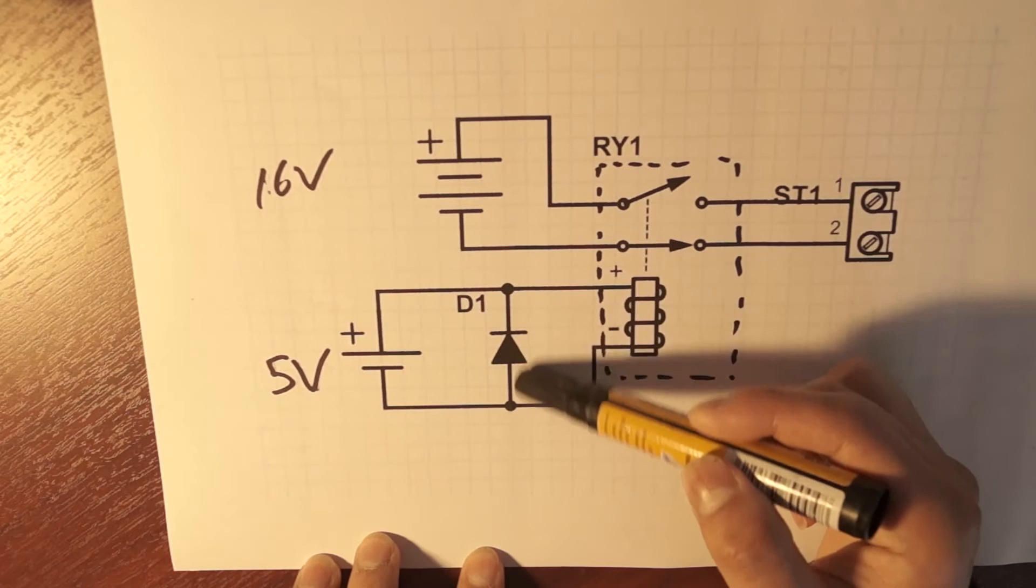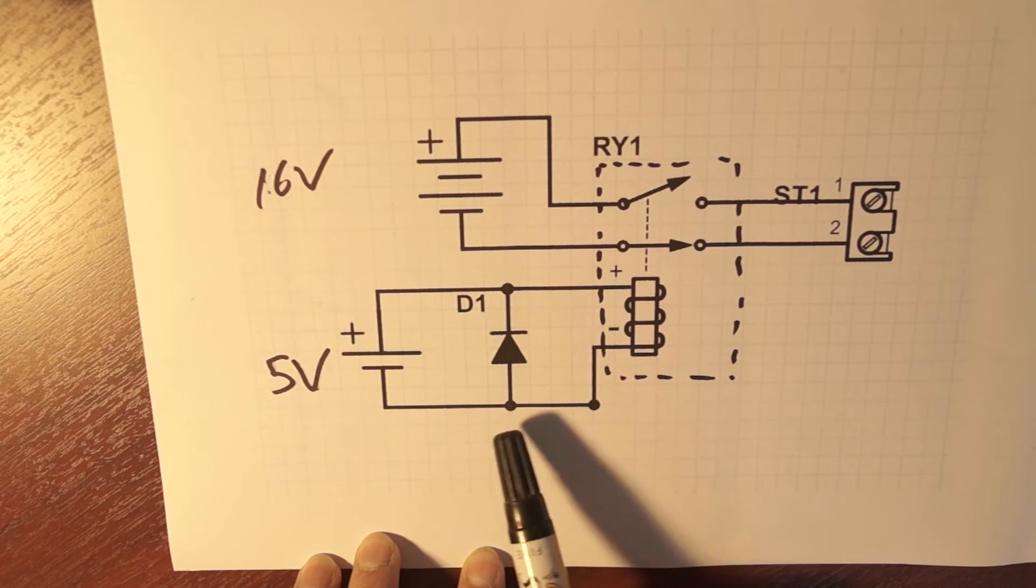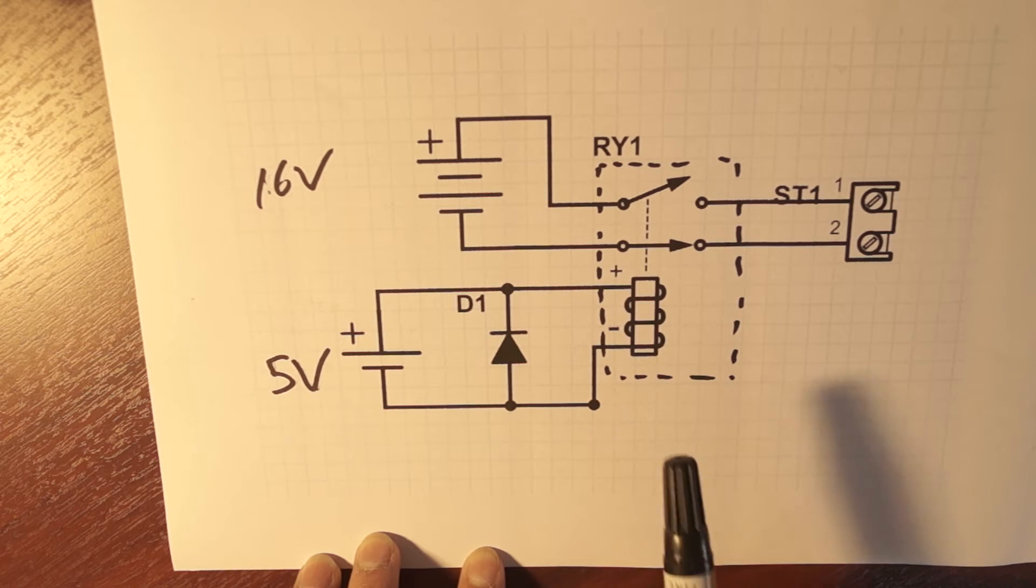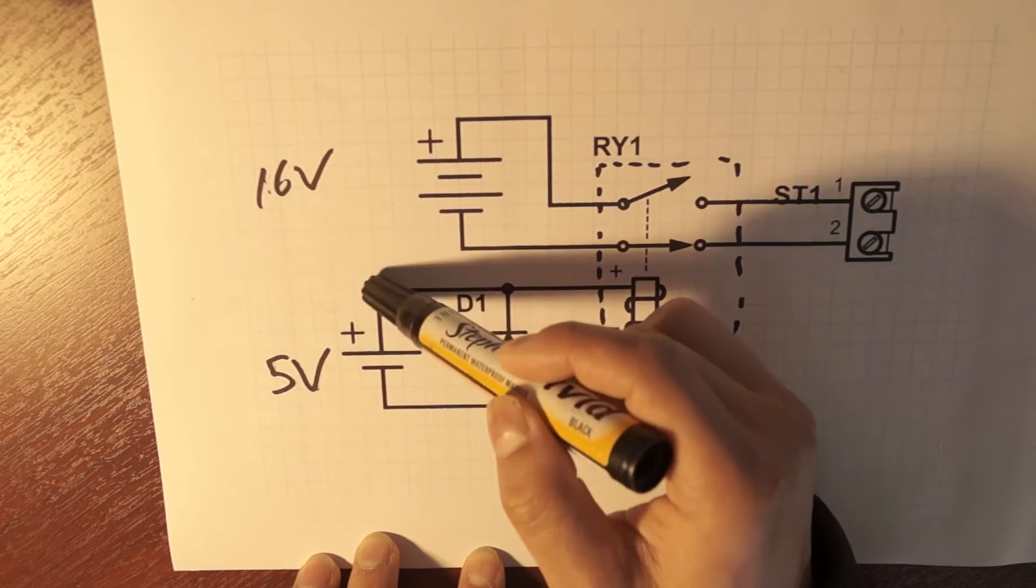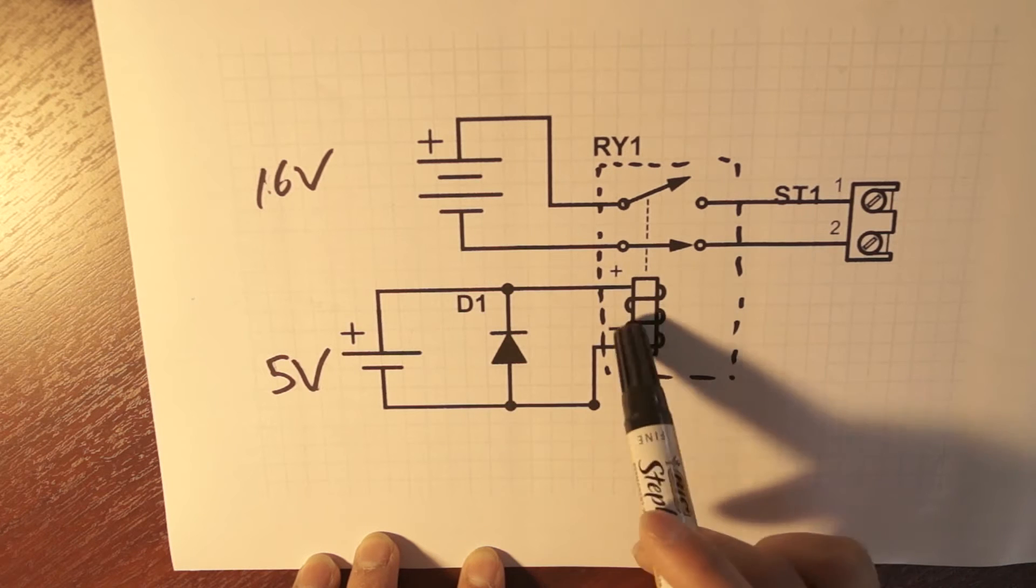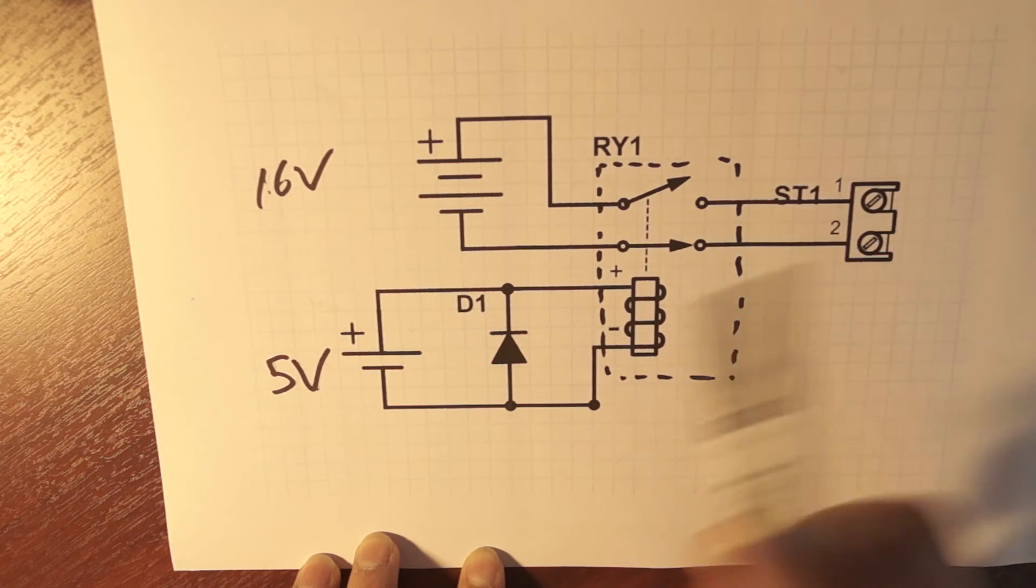This diode here is what you call a flyback diode. It is very important to put one of these near an inductive load such as a relay coil. And when an RC switch applies voltage across here, the diode won't let current flow down here. So it flows down here, energizes the coil, and switches on the relay.